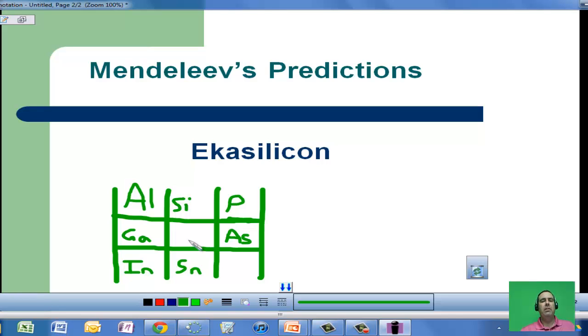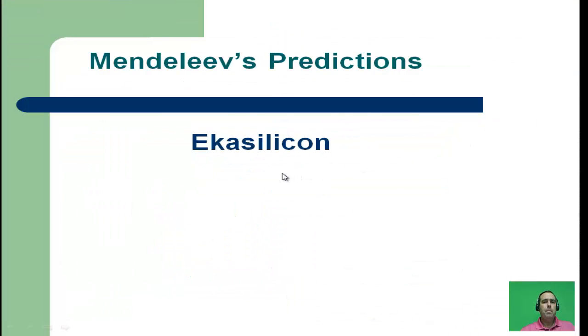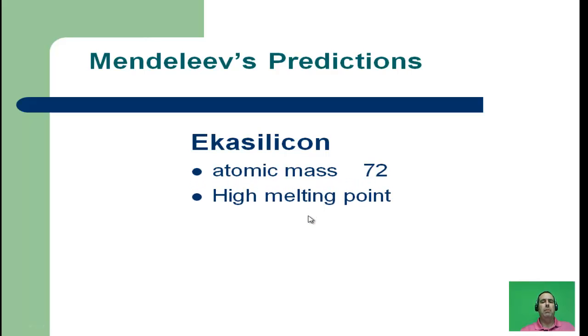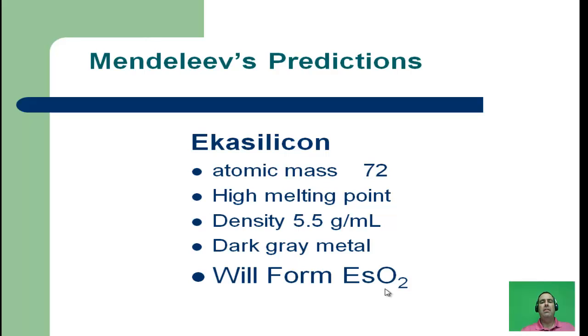So he said there must be an unknown element that goes there. His periodic table had lots of unknown spaces. Instead of just leaving it unknown, he gave it a name and called this unknown element eka-silicon. He said if eka-silicon exists, it's going to have a mass of about 72, an extremely high melting point, a density of about 5.5, and be a dark gray metal. He said that when it combined with oxygen, it would form a formula of ESO2.